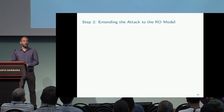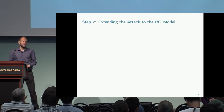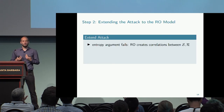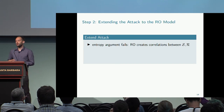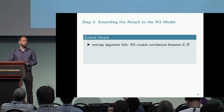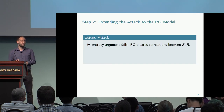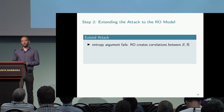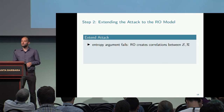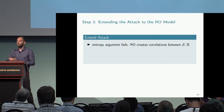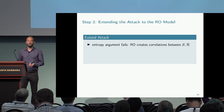How can we extend this to the random oracle model? The issue is that the entropy argument fails because we can no longer only look at the transcript — the random oracle creates additional correlations between the sender's and receiver's views. Previously we could argue that their views conditioned on the transcript are independent, but that is not the case anymore with a random oracle, since they can query a functionality that gives them common entropy.